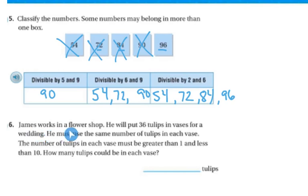Finally, James works in a flower shop. He will put 36 tulips in a vase for a wedding. He must use the same number of tulips in each vase. The number of tulips in each vase must be greater than 1 and less than 10. How many tulips can be in each vase? So he's got 36. And the number of tulips has to be greater than 1 but less than 10. So 2 goes into 36 evenly, as does 3, 4, 6, and 9. And all of those numbers are greater than 1 and less than 10. And they go in equally.